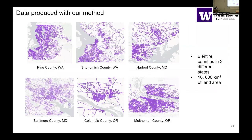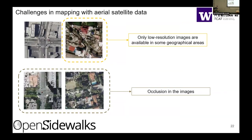Upon testing our approach in several small areas, we then used the approach to generate data for several transit agencies across multiple counties. We generated data for six entire counties in three different states, covering around 16,600 square kilometers of land area, including King County and Snohomish County in Washington, Hartford and Baltimore in Maryland, and Columbia and Portland in Oregon.